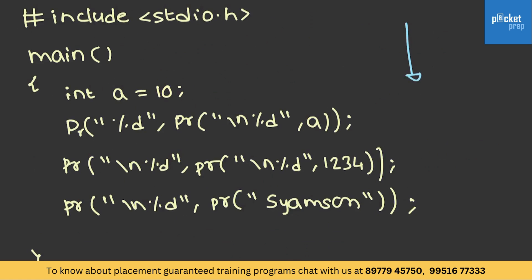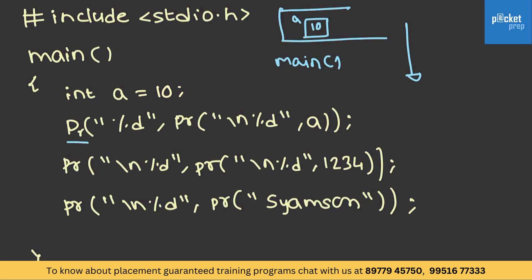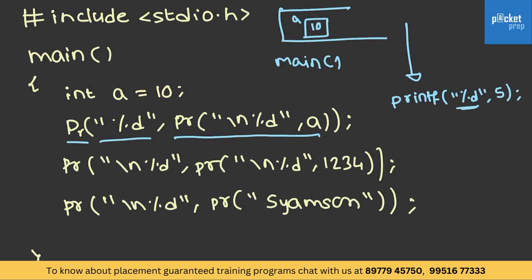Consider this example. Initially the main function call is created. Let's take a stack. The main function call is created and a variable a has been declared with the value 10. Printf is a function call and these two are the arguments it is carrying. Printf is generally written with a format specifier — %d with value 5 specifies it has to find an integer, so 5 will be printed.